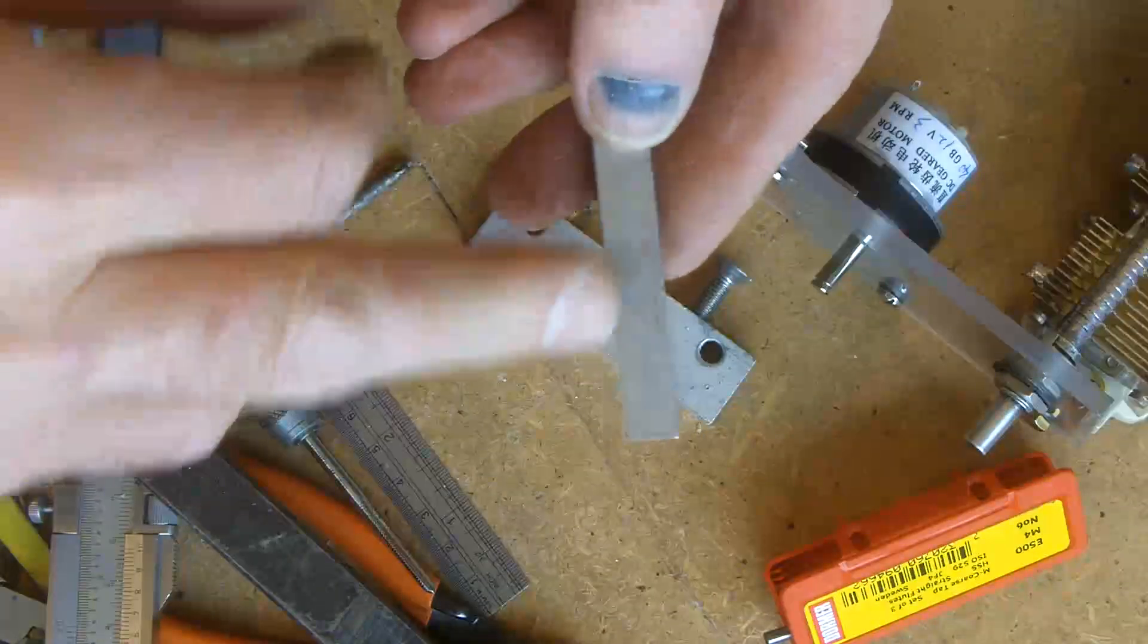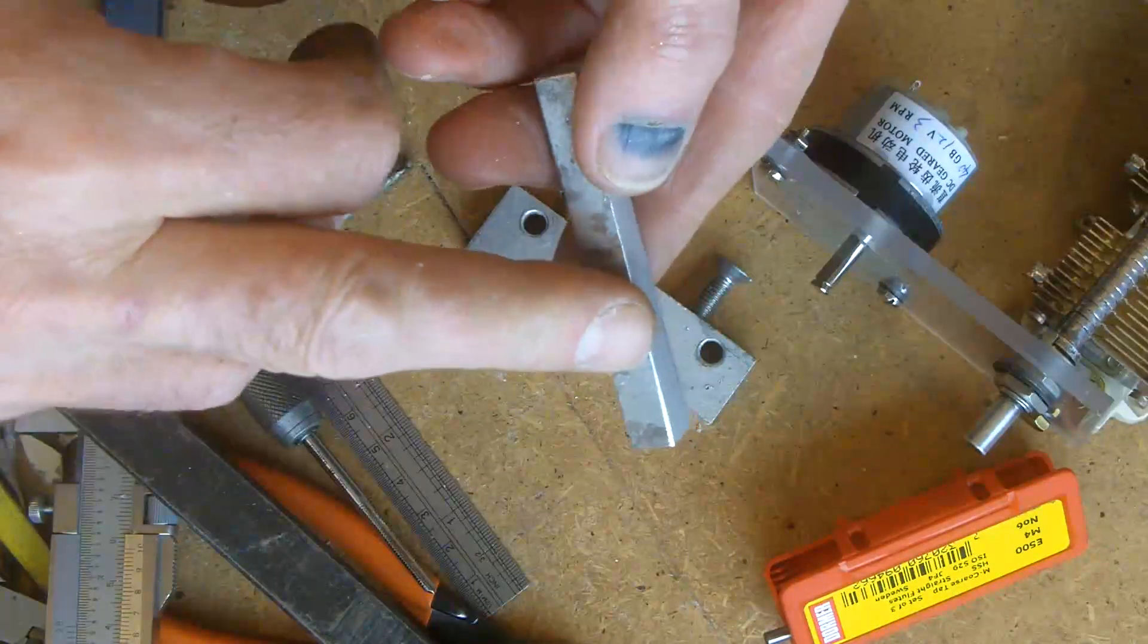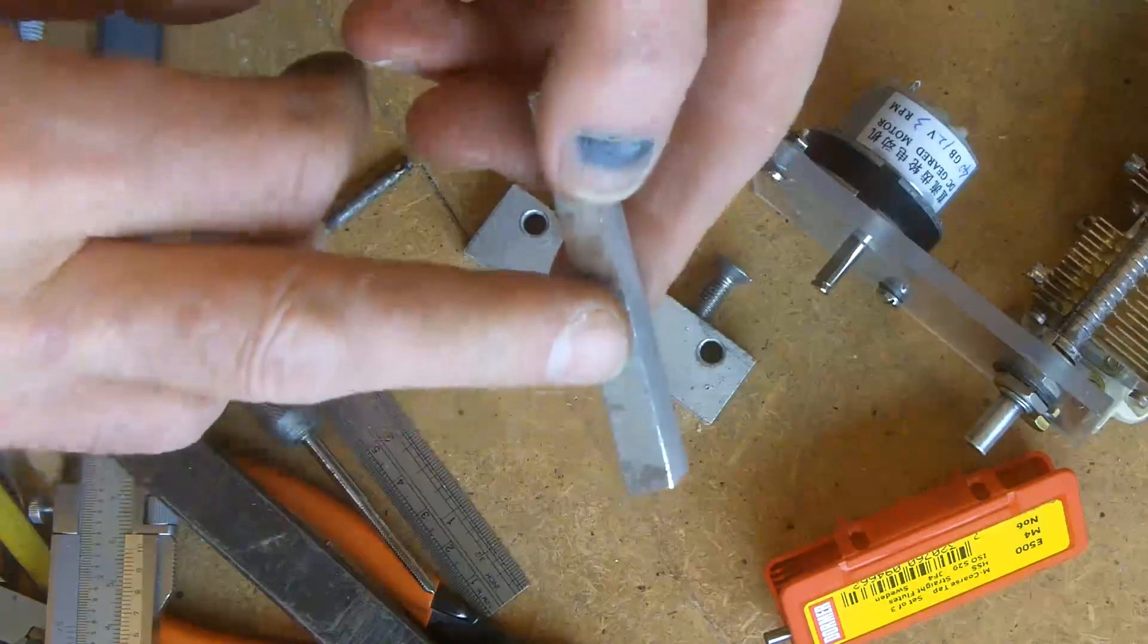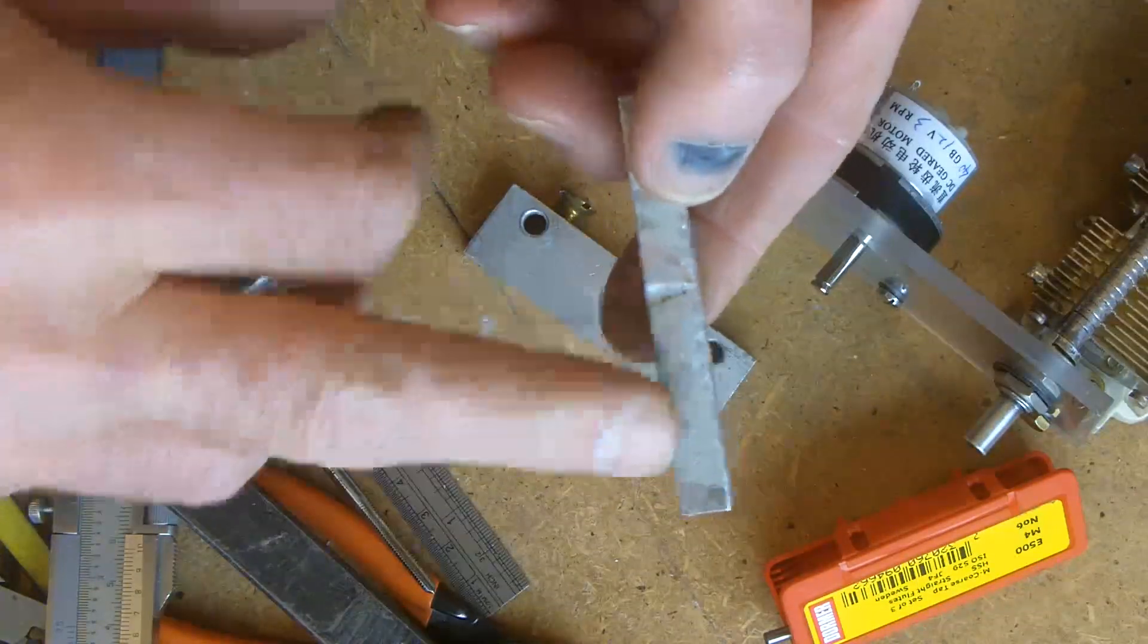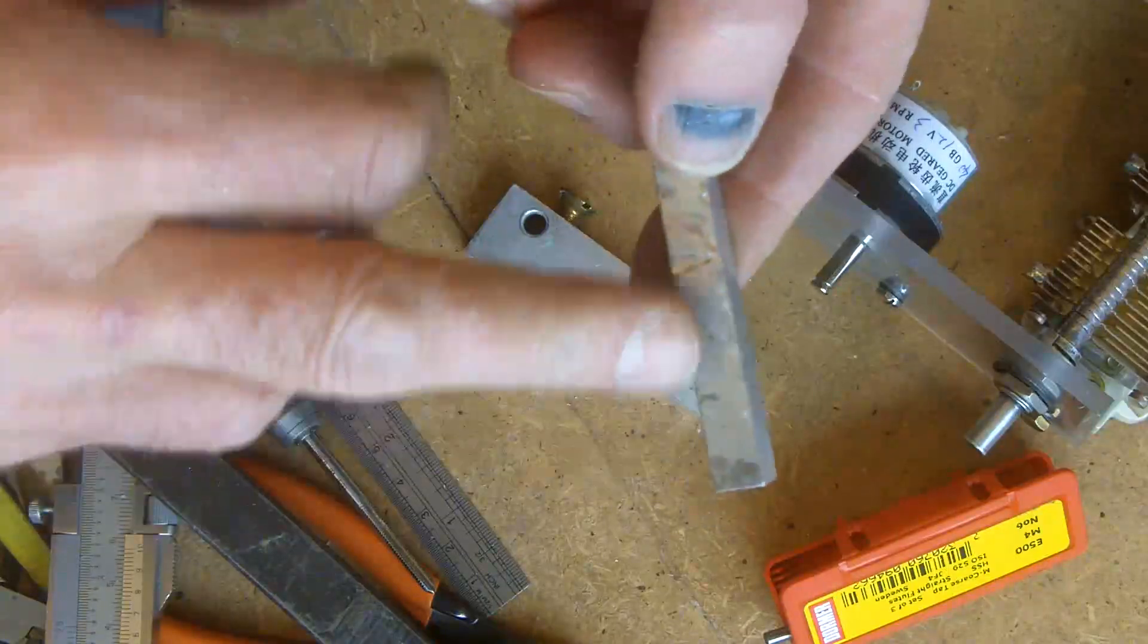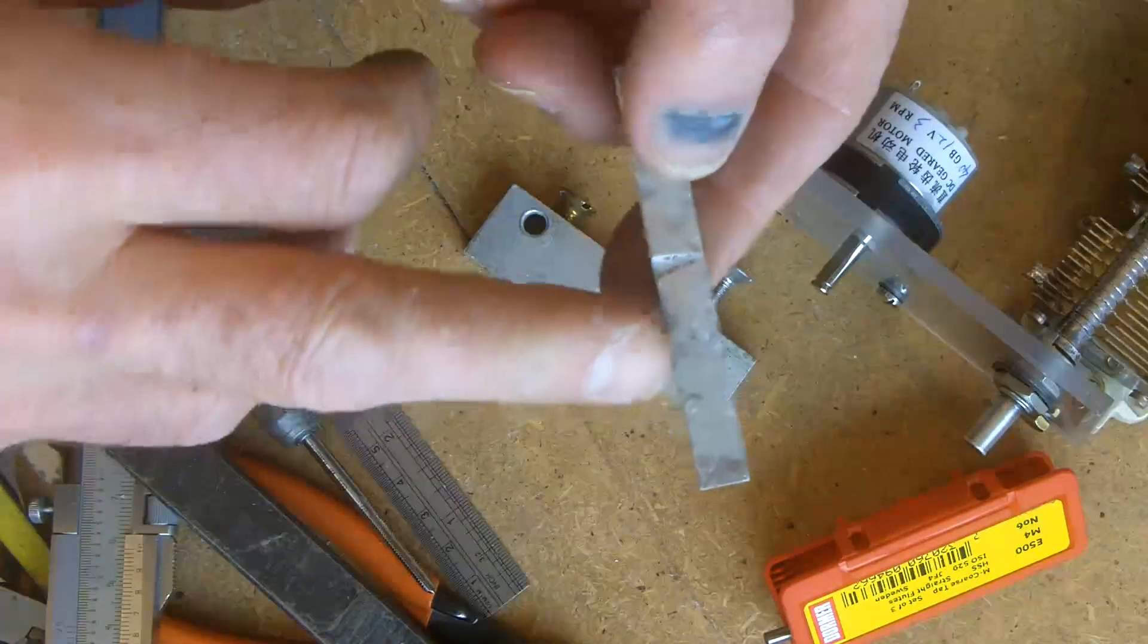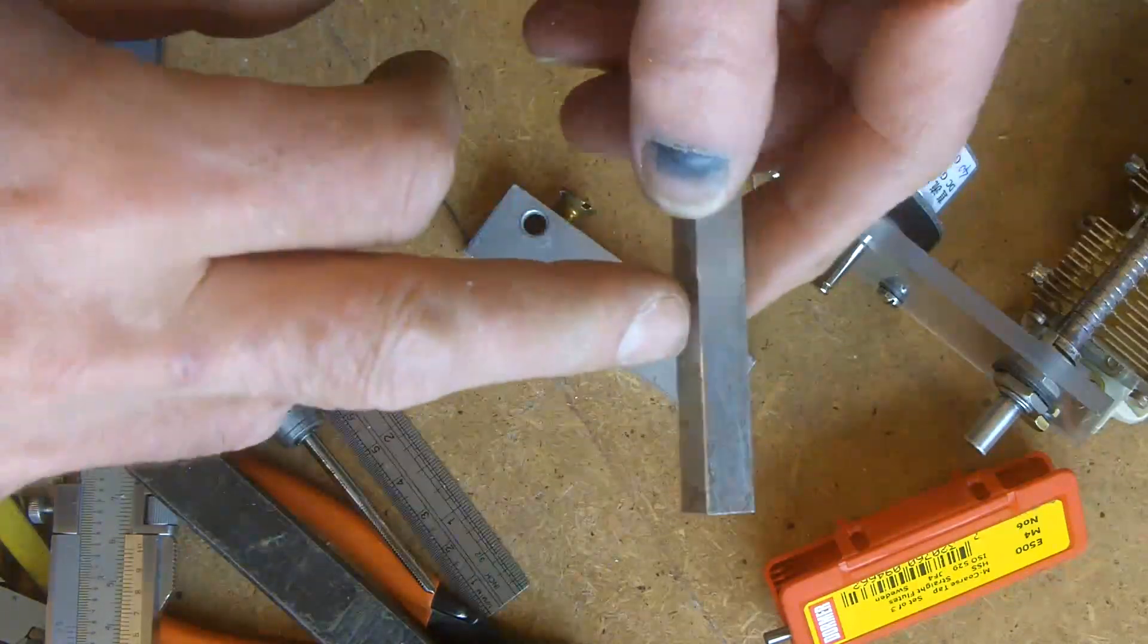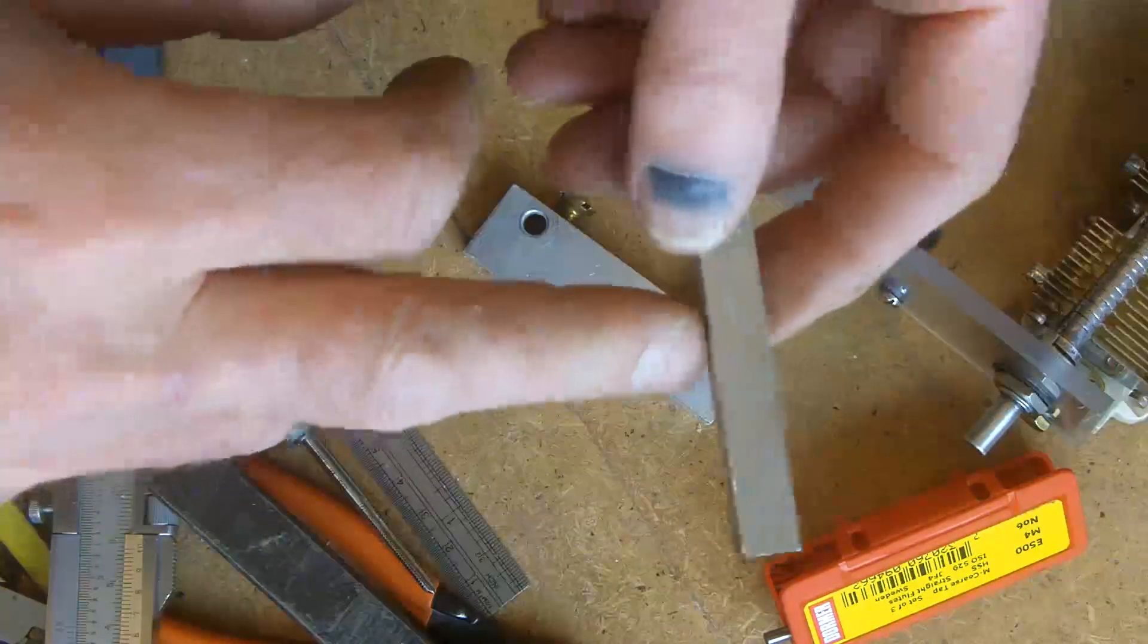So now I'll set about putting the holes in there. I want one of these to be 19.13mm centres and the other one to be 20.06mm. That's theoretically what it should be.